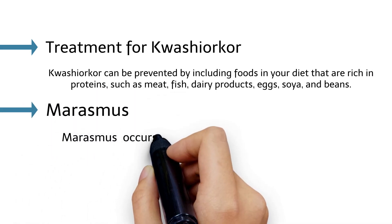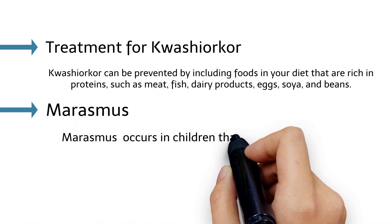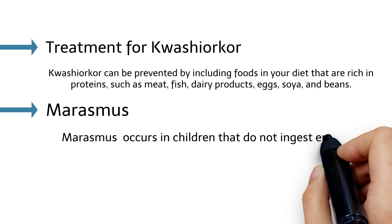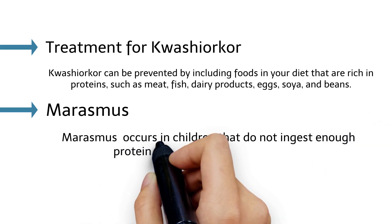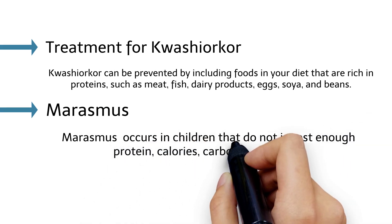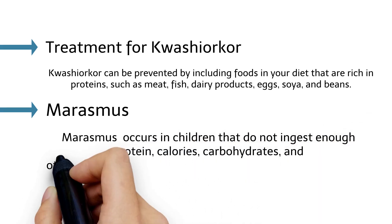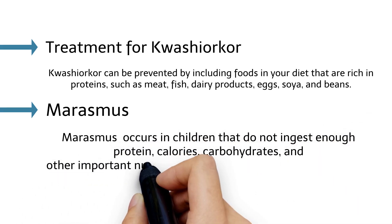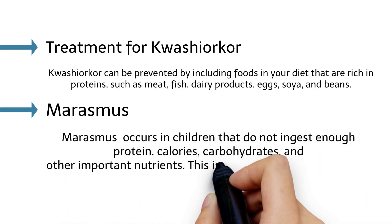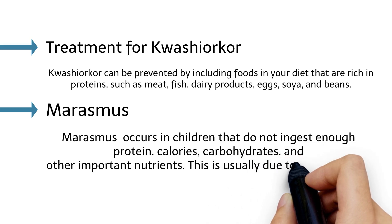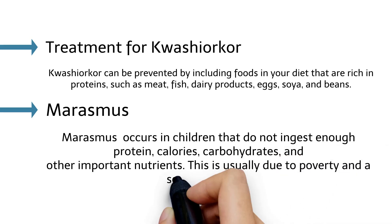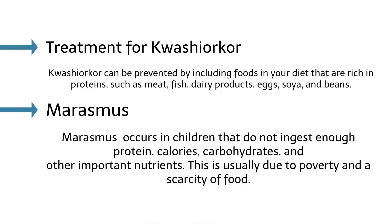Marasmus occurs in children that do not ingest enough protein, calories, carbohydrates, and other important nutrients. This is usually due to poverty and a scarcity of food.